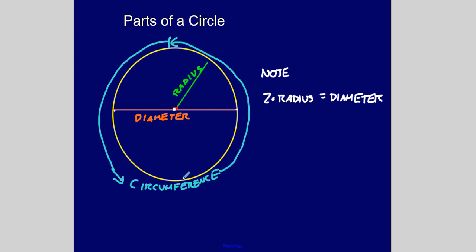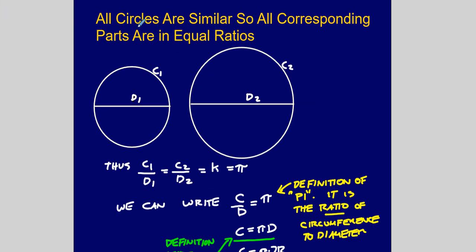The circumference of a circle is one lap around the circle — the distance around the circle one time. If you roll the circle one revolution, the distance you rolled would be the circumference. All circles are similar figures, and in similar figures all corresponding parts are in equal ratios. So the ratio of circumference to diameter in any circle equals some constant k — often called the constant of proportionality in common core curriculum.